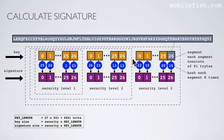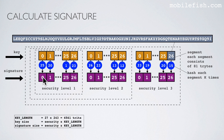This is our key. Each square is a segment and each segment consists of 81 trites. Each segment is hashed k times, where k is the number we just calculated. What we get is a signature, and depending on the selected security level: this is our signature when we select security level 1, this is our signature when we select security level 2, and this is our signature when we select security level 3.